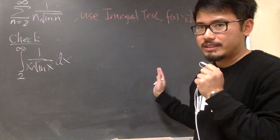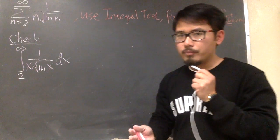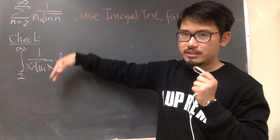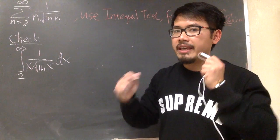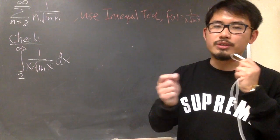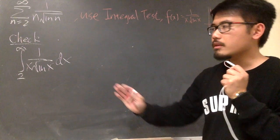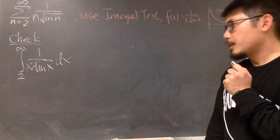But then in terms of the convergent, if this converges to 5, for example, this does not converge to 5. We only know in terms of the convergence, they will have the same convergence. Either they both converge or they both diverge. They don't necessarily converge to the same value. But then our answer, we only worry about if this converges or not.